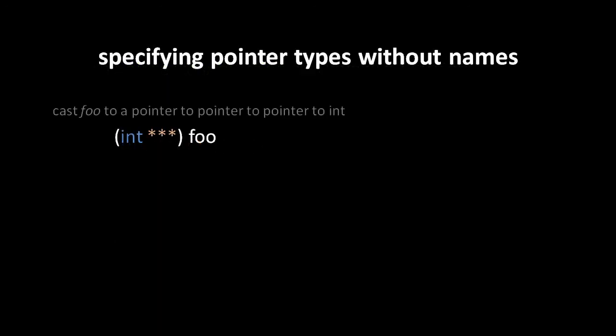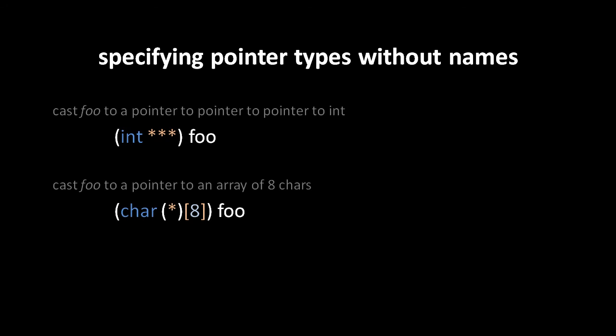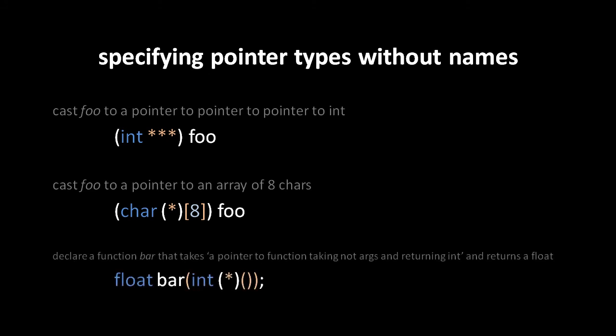In a few contexts, we need to specify pointer types without having any name to modify. To cast a variable foo into an int pointer pointer pointer, there is no name for the asterisks to modify. In the next example, to cast a variable foo into a pointer to an array of eight chars, we need to surround the asterisk in parentheses to subvert the precedence. Otherwise, the cast type specified would be an array of eight char pointers, which is not only the wrong type, but would make the cast totally invalid because you can't cast to arrays. In the last example, we're declaring a function bar that takes as argument a pointer to a function which takes no arguments and returns int, while bar itself returns float. The parameter type declaration requires parentheses around the asterisk to subvert the higher precedence of the empty parameter list parens.